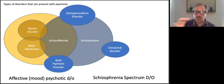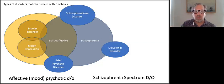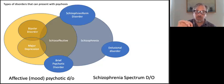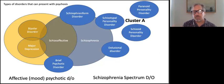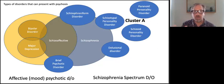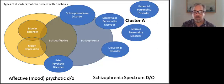Delusional disorders are a little more unusual in that they are clearly circumscribed to usually one particular distorted thought, whereas schizophrenia tends to have a more global presentation. In a delusional disorder, the person's thought distortion tends to be focused on only one or two specific situations. And then we have what we used to call the cluster A personality disorders, which are people who lean towards having a distorted view of reality and the people around them, usually in a more interpersonal manner.